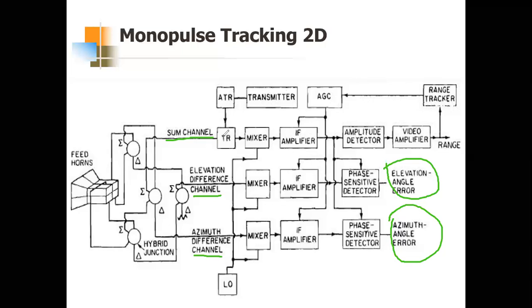This is the transmitter part which is also connected to the sum channel. In the previous one-angle-coordinate monopulse we also saw that the transmitter section is connected to the sum channel. You can see there are four hybrid junctions here — let us label them one, two, three, and four.